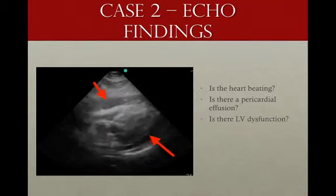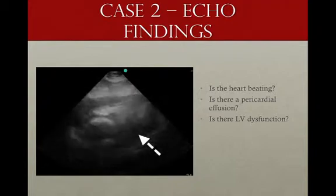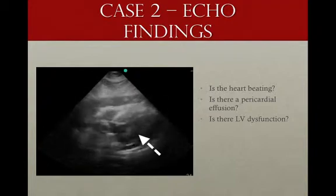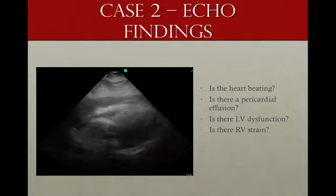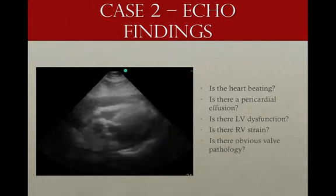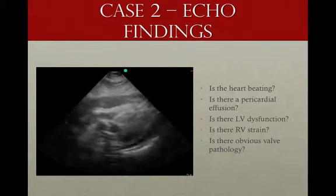How does the left ventricular function look? It looks like the left ventricle might be working a little overtime, but looks pretty good otherwise. Is there any right ventricular strain? No strain — the right ventricle is not dilated. And is there any obvious valve pathology? In this image you can't really see the valves well enough to determine that.